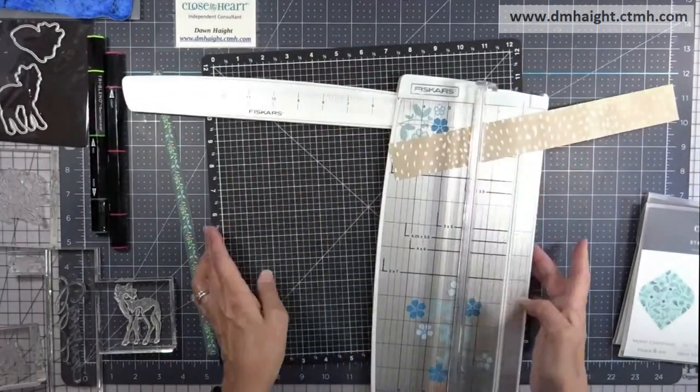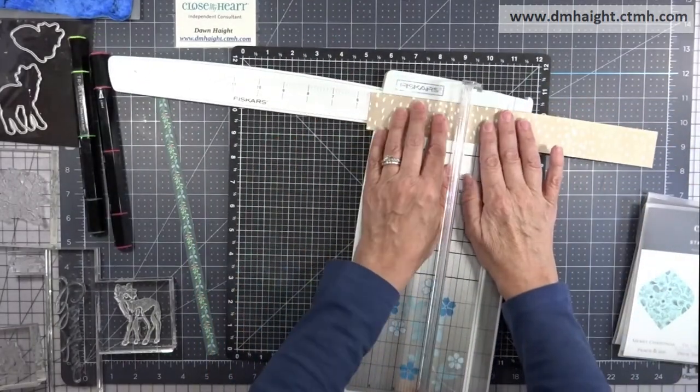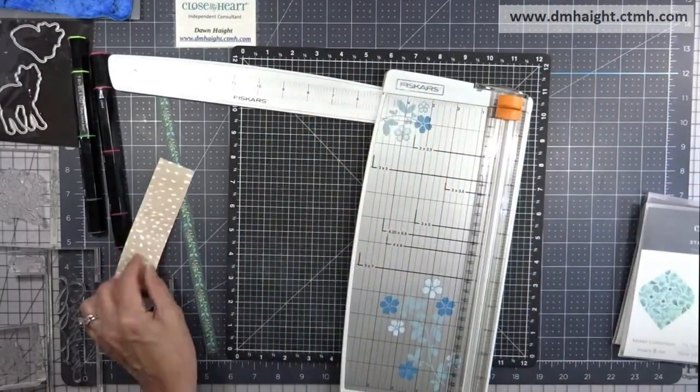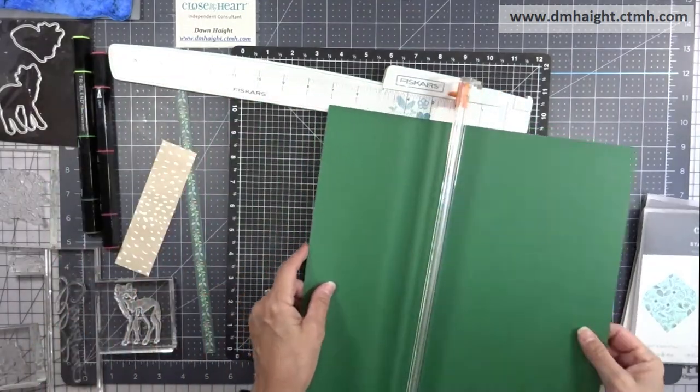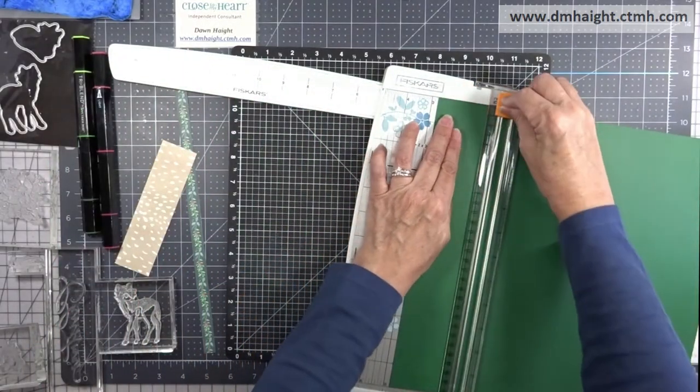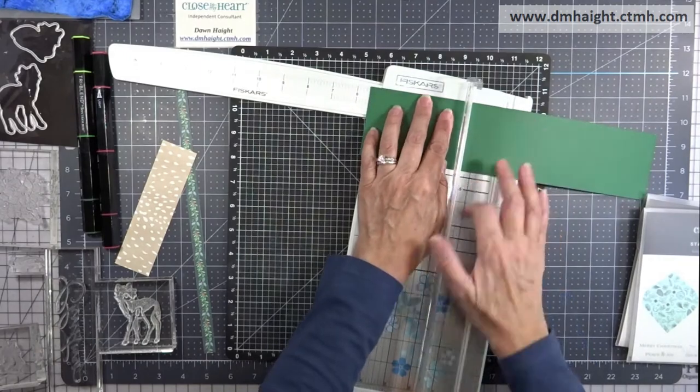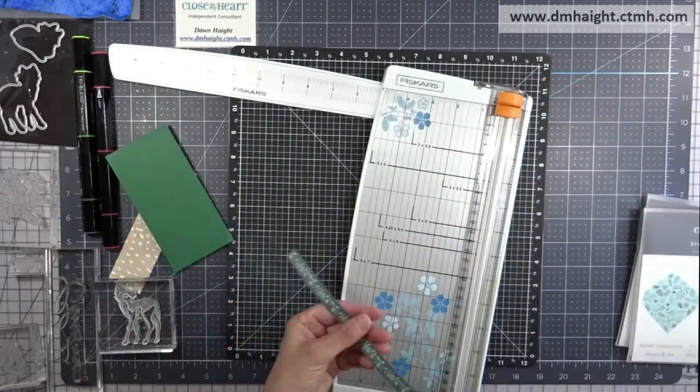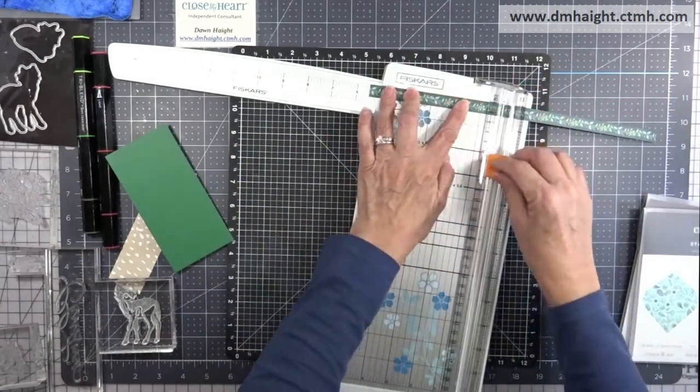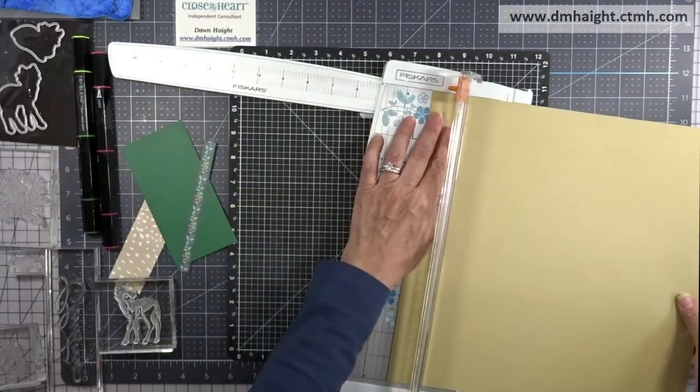I'm going to cut a piece at one and a half inches by five and a half inches. This is going to be a landscape A2 size card, and I'm going to cut some evergreen cardstock at two and three quarters inches by five and a half inches, and then my zip strip at five and a half inches.